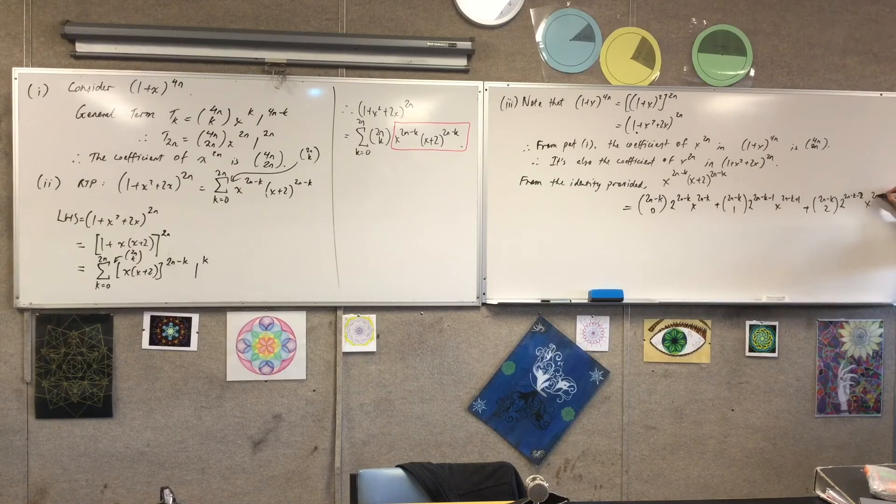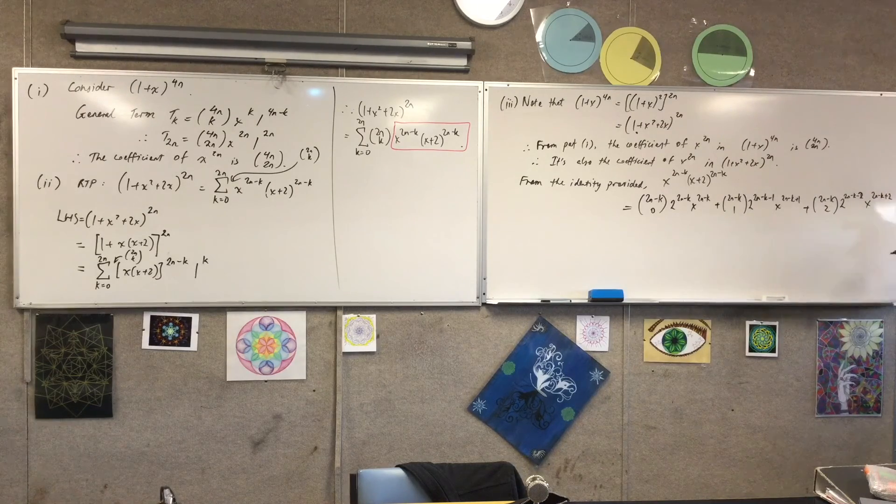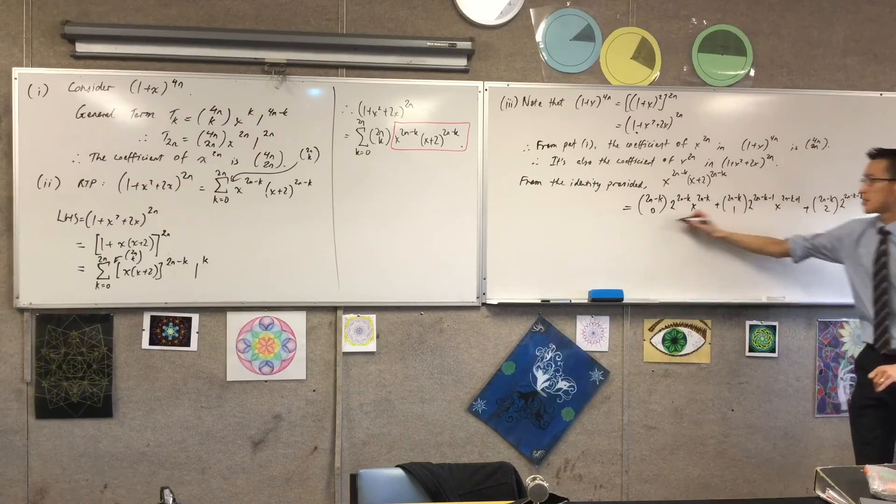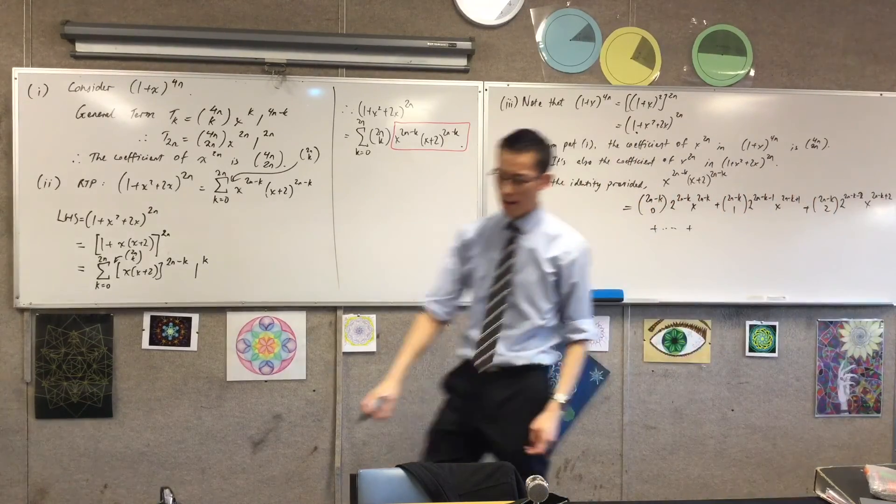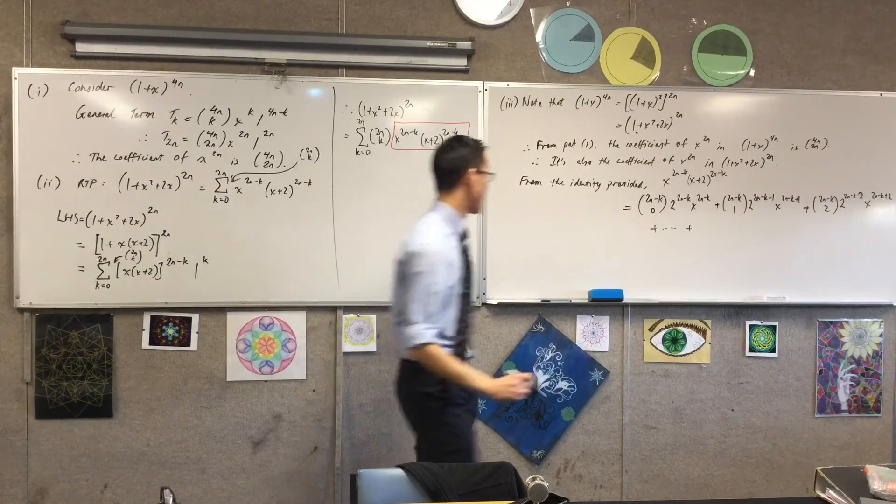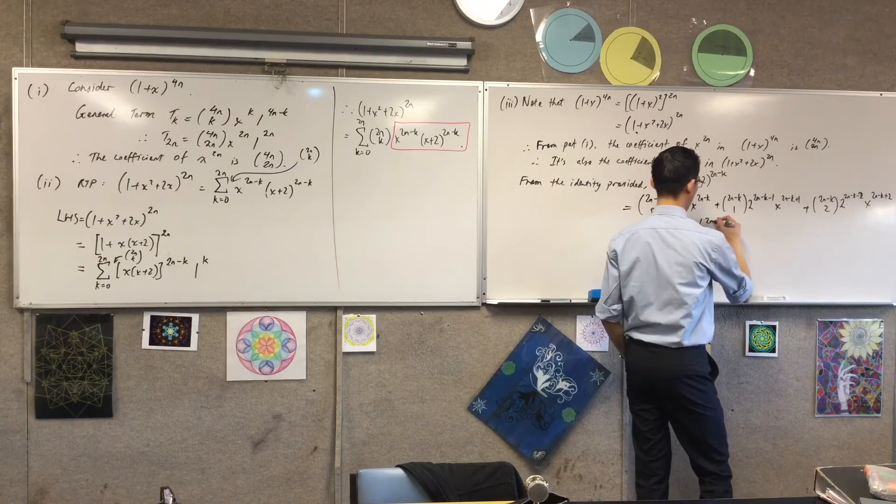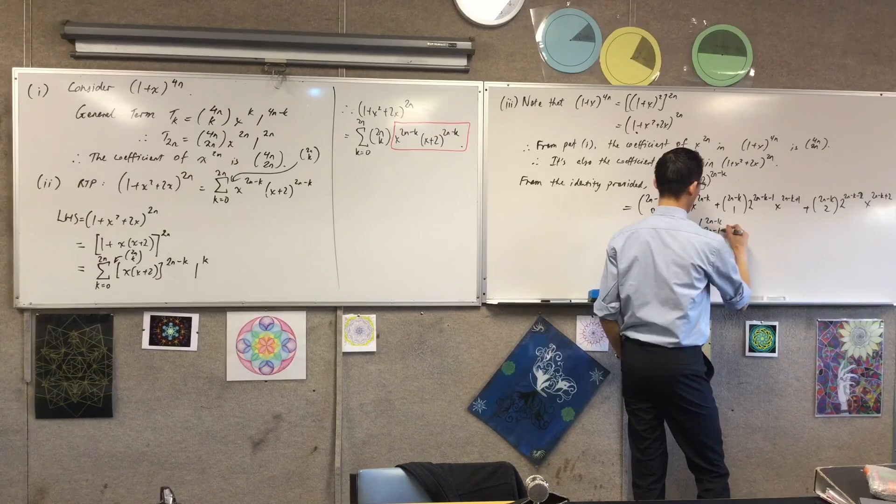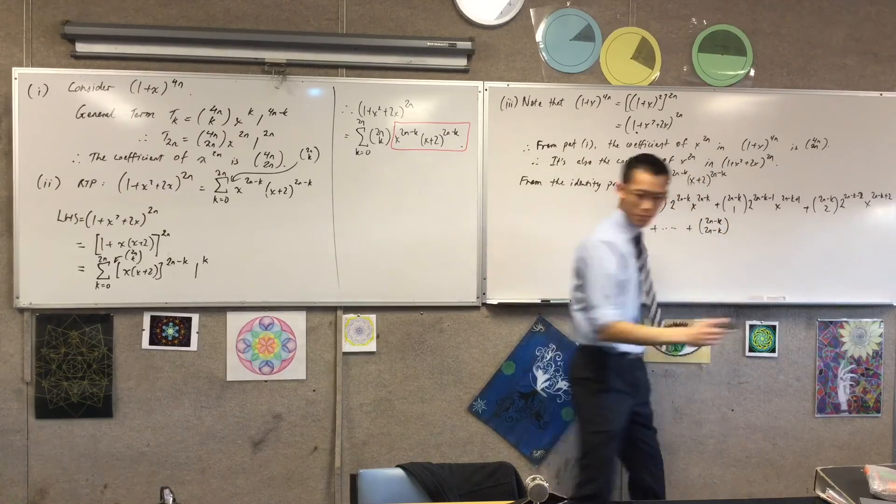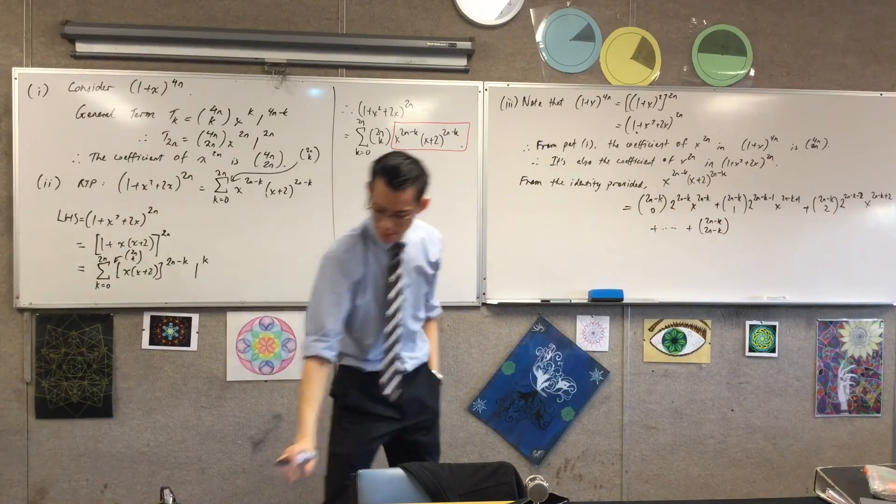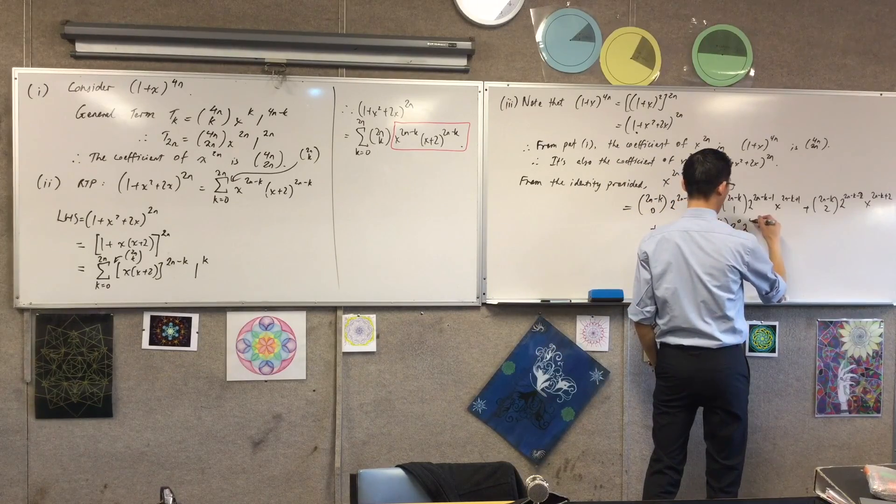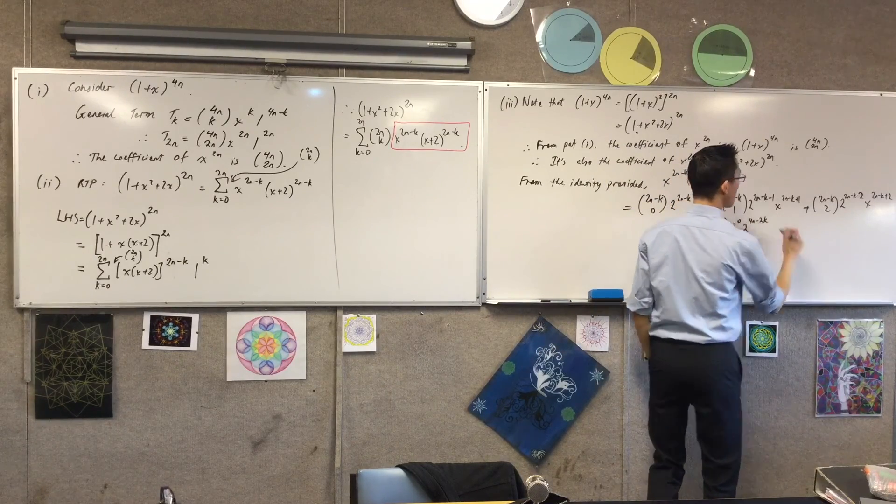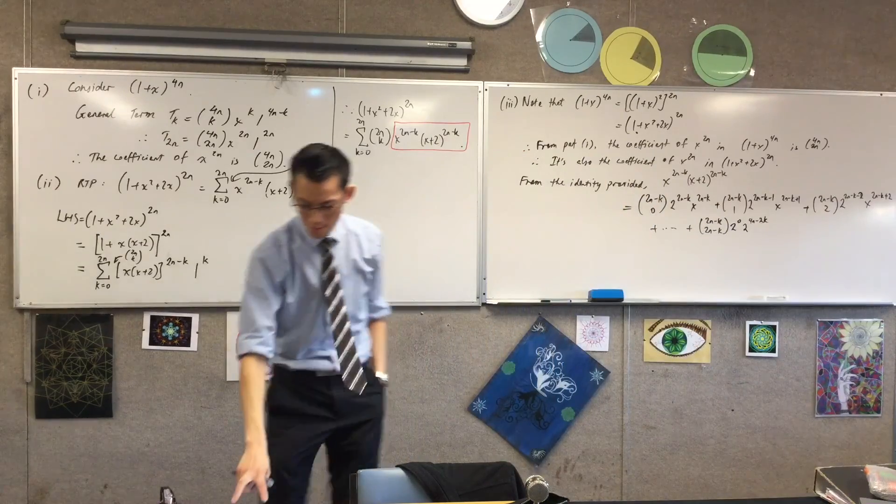So, I'm going to write that out. 2n minus k plus two. Now, I've got three terms. Now, I'm ready to dot, dot, dot generalize. So, you can see they've provided us the last term in their series. So, it looks like this. Make sure I get it right this time.